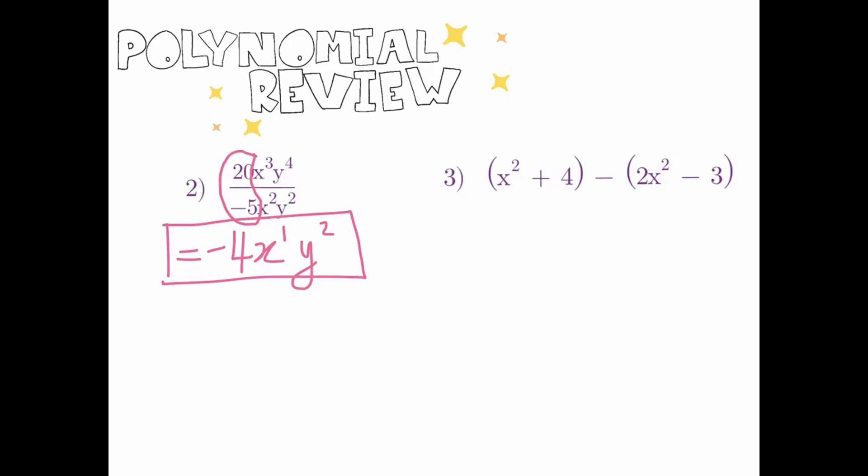Example number 3. Here we have a binomial in brackets and another binomial with a subtraction sign. Whenever I have numbers inside brackets, I like to think of them as trapped — you can't do anything with them until the brackets disappear. To get rid of the brackets, we use the distributive property. If there's no number in front of the bracket, that means it's a 1, so I'll go ahead and write the 1 in.